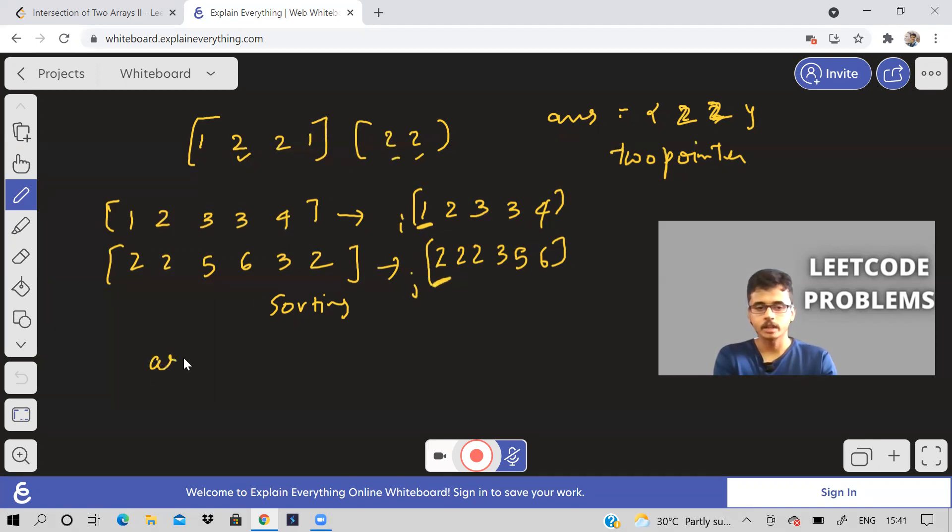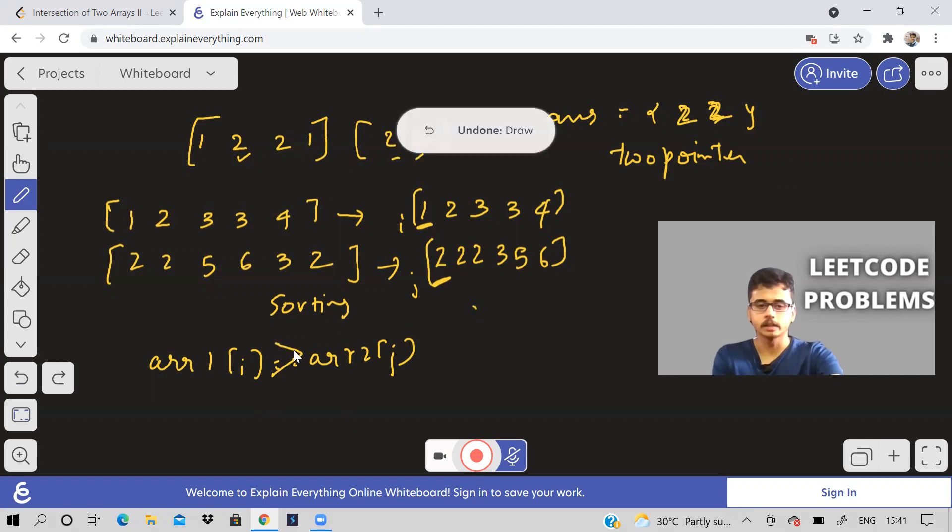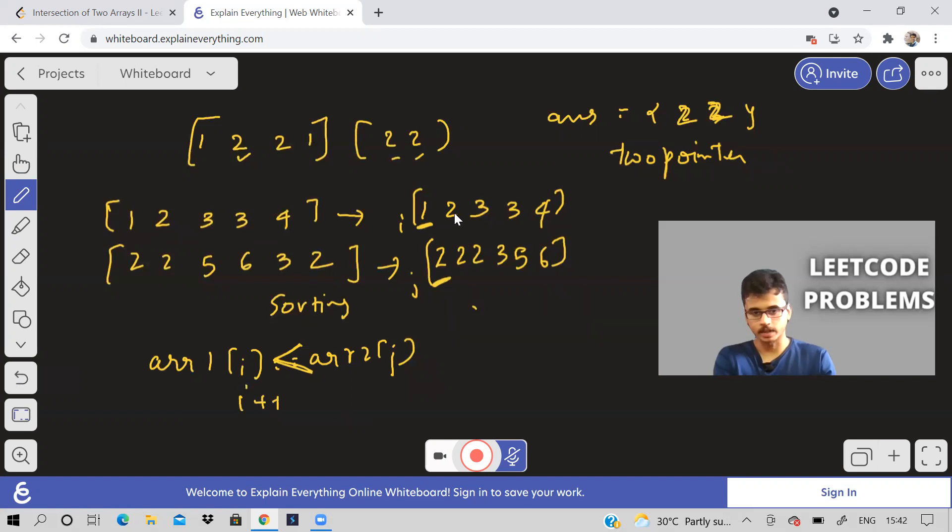Now I'll check if array one of I is equal to array two of J. Is it equal? No. What is the condition? In this case, array one of I is less than array two of J. In that case, what I will do, I will move my I pointer. I will do I plus plus, I will move my I to next location.